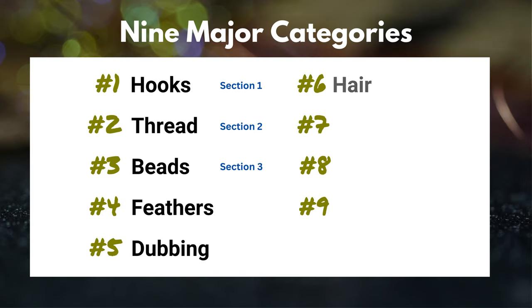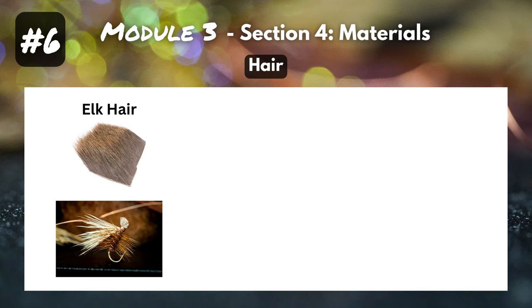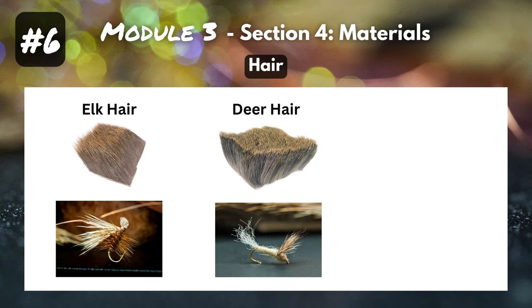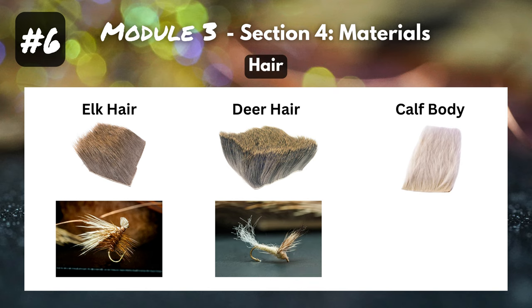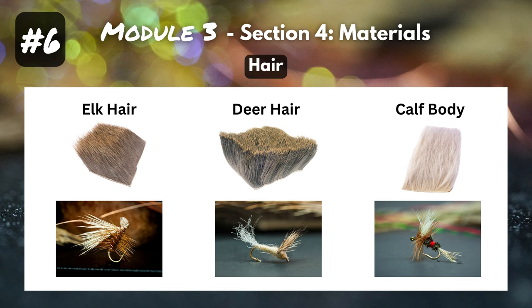Let's dive into fish favorite material category number six: hair. There are a number of different hairs used in fly tying, but we'll cover three that are used very often. That's elk hair, which you might see on something like an Elk Hair Caddis; deer hair, which is used in a lot of streamers or Comparadun dry flies; and calf body, which you might recognize as the wings on a Royal Wulff, or which is also used in a lot of parachute dry flies.